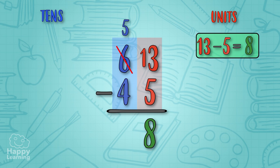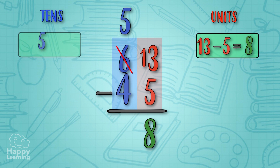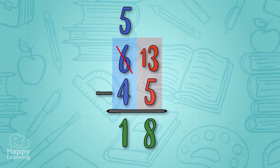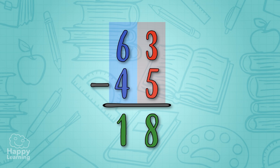Now we subtract the tens: we had 5 tens in the minuend and 4 tens in the subtrahend — five minus four equals one. So 63 minus 45 equals 18. It's easy peasy, don't you think? Now you have to practice lots!